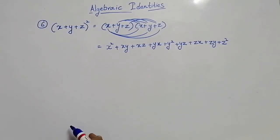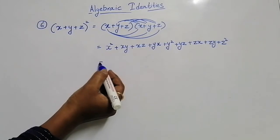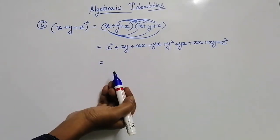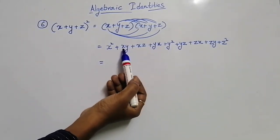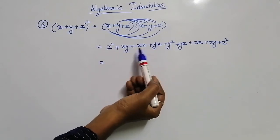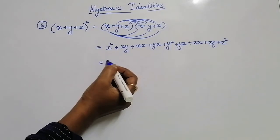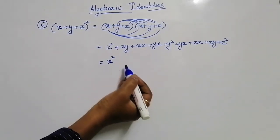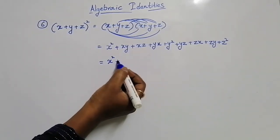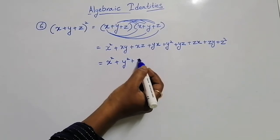Now observe the like terms. What are the like terms here? Here one xy is there, and here one xy is there. y into x or x into y, both are same students. So first I am going to write all the square terms: x square plus y square plus z square.